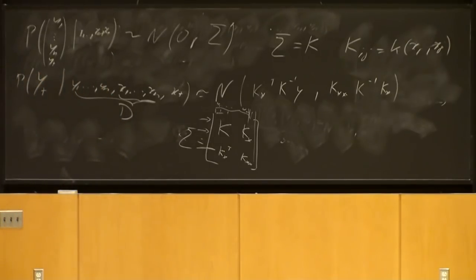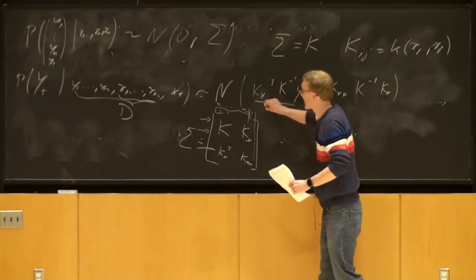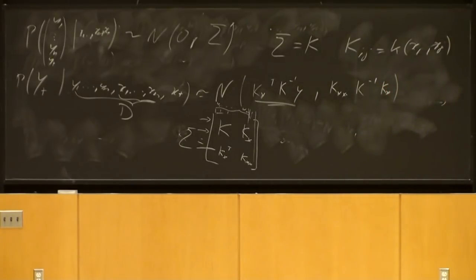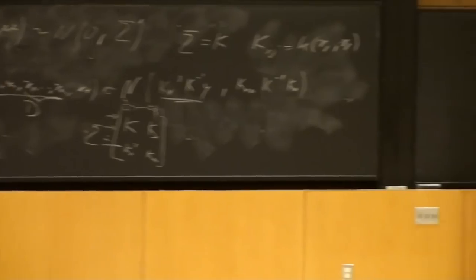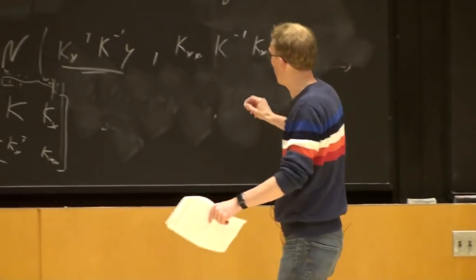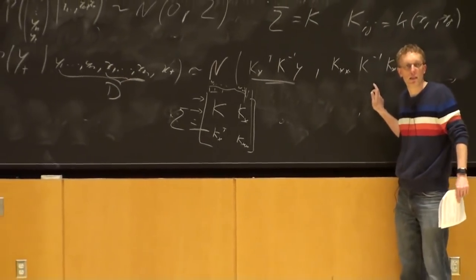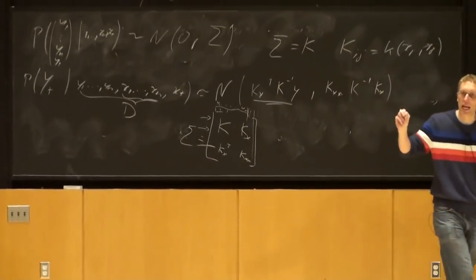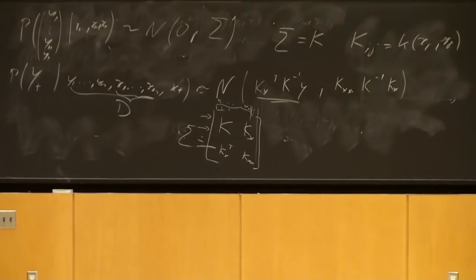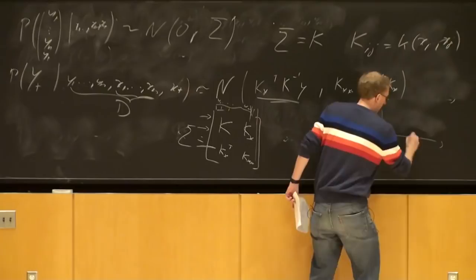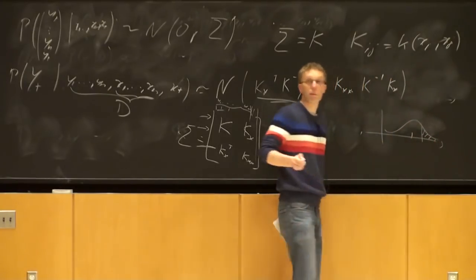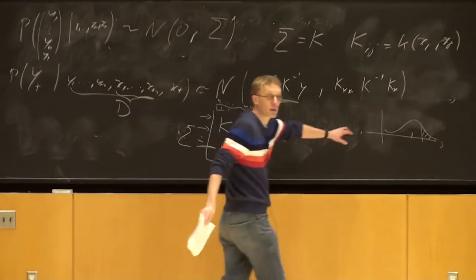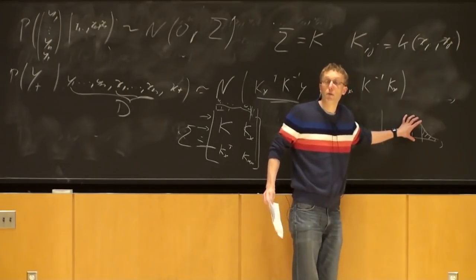Yes — the mean of the distribution is exactly the same as kernel regression! So we went through a whole lecture and arrived at kernel regression. But there's something beautiful in addition: we also get a variance. We don't just get a point prediction; we get a full distribution. The price of your house is not just $350,000 — it's an expectation of $350,000 with a good chance of being above $400,000.